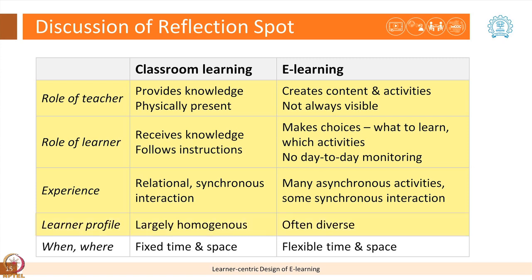In terms of who the learners are, in a traditional classroom there is more homogeneity, especially in a school or college setting, because we know who our students are — they may be third-year engineering students or seventh-grade students in a particular school. In workplace scenarios or workshops there may be a little more variation, but by and large the learners are more or less similar to each other. By contrast, in an e-learning scenario the diversity or heterogeneity among learners is very high. In online courses we do not know who might enroll, and in workplace settings you have people with varied backgrounds and knowledge.